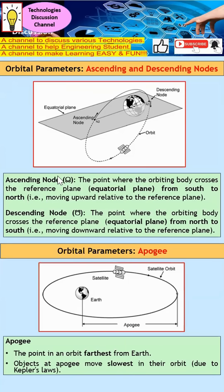For the ascending node, the satellite will move from south to north — this is what we call ascending. We use this ascending node to describe the satellite. On the other side, the descending node is the reverse: the satellite moves from north to south, and this is what we call the descending node.